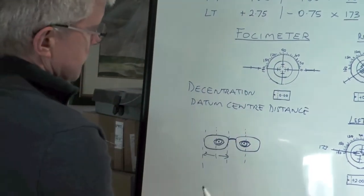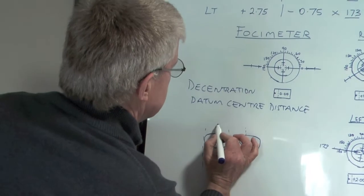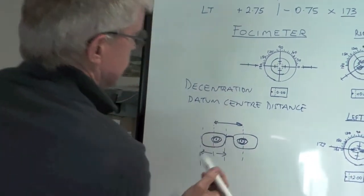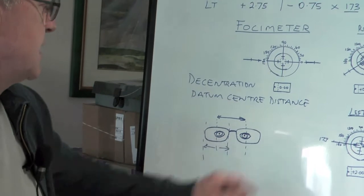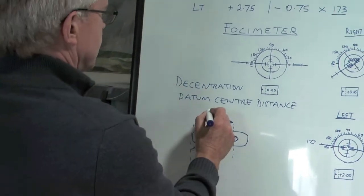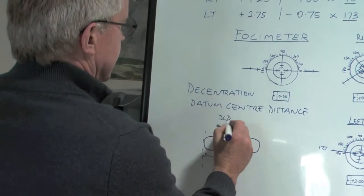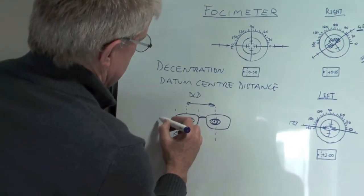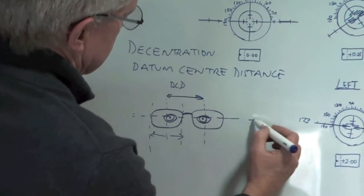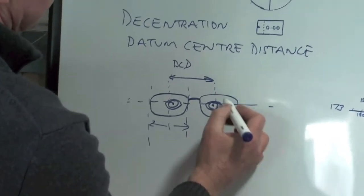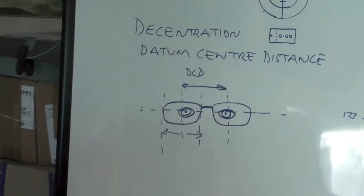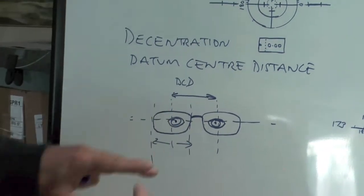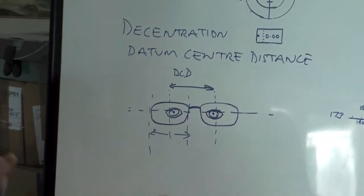Okay, so we need to measure what is this distance here. So the distance between the center of the right and the left lens. That is called the DCD. And that distance is measured at the midpoint, so the midpoint between the top and the bottom. I haven't drawn it very well, but hopefully you can understand what I'm saying.